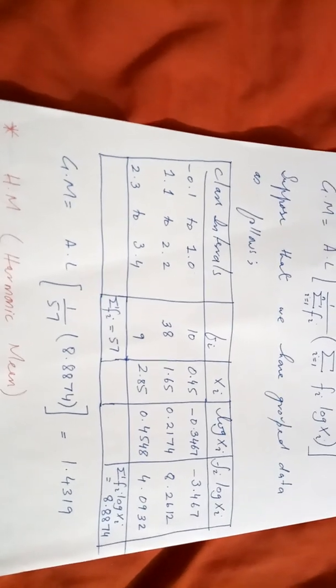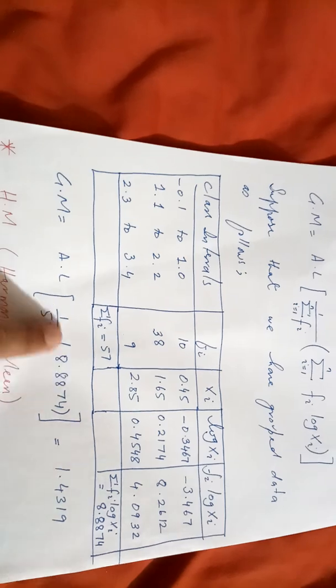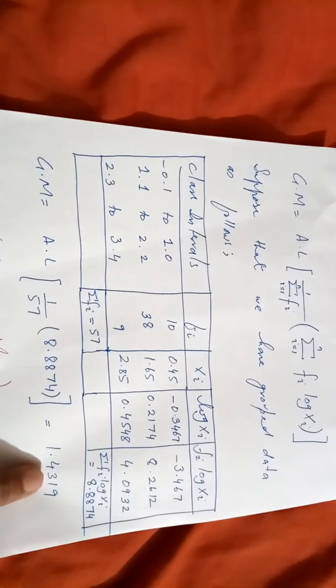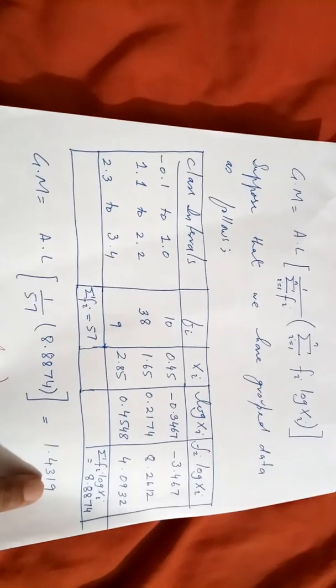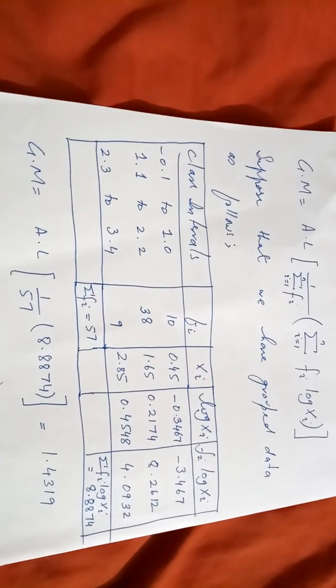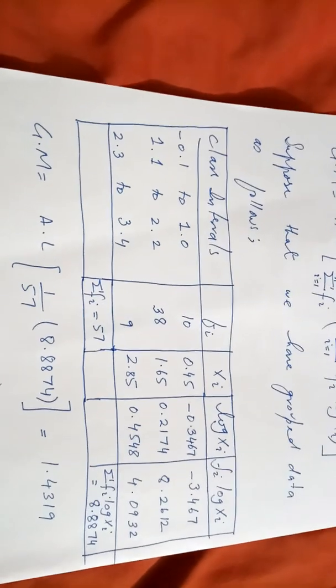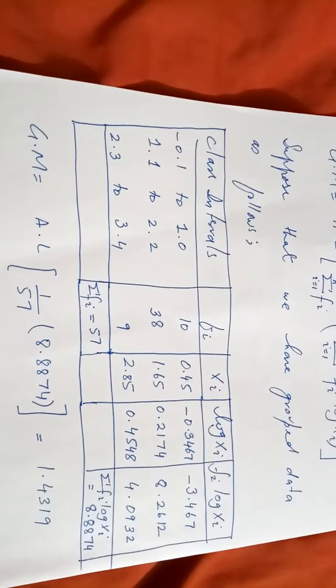I told that you have to press second function log or shift log, and then you enter whatever the number is inside, and your answer will be 1.4319. So this 1.4319, what is this? It's a geometric mean for this grouped data. In other words, this is an average for this data.